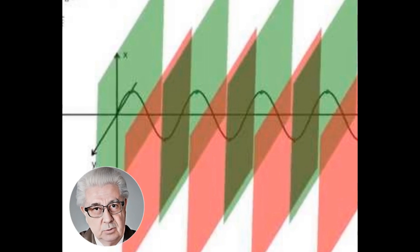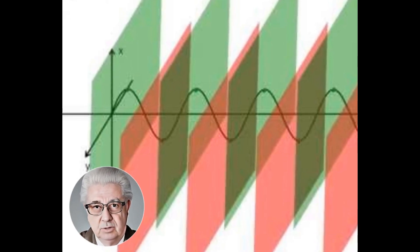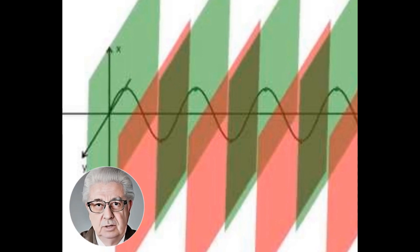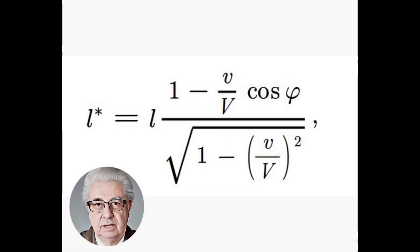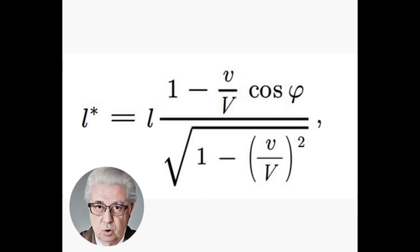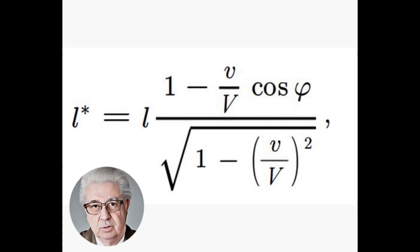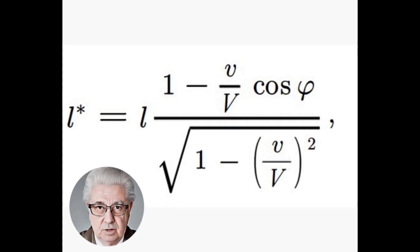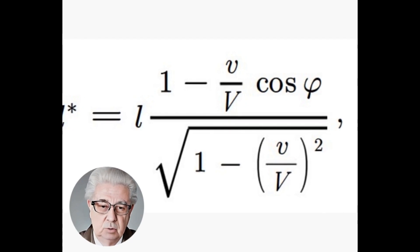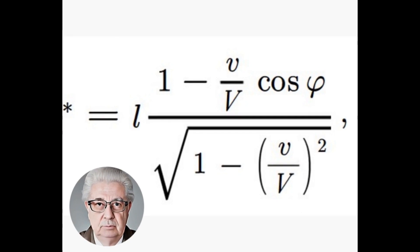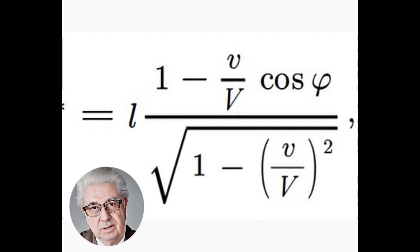Let L be the energy of a plane light wave in a first three-dimensional coordinate system, and L* the energy of the light wave in a second three-dimensional coordinate system with movement parallel to the horizontal x-axis, as mentioned in Einstein's 1905 article. This equation represents the energy of a plane wave of light in two coordinate systems in relative motion, known as the law of conservation of energy in the reference frame of a moving observer. L* is the energy measured in the second reference coordinate system, while L is the energy measured in the first. Lowercase v is the relative velocity between the two coordinate systems and capital V is the speed of light in a vacuum — Einstein's symbology in his original article. Phi is the angle between the direction of relative velocity and the direction of the electromagnetic wave.